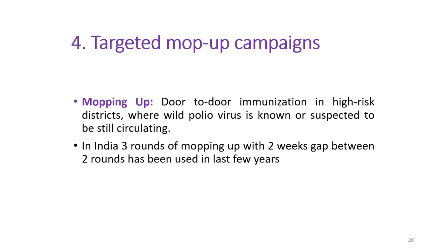The fourth strategy for polio eradication is targeted mop-up campaigns. Mopping up means door-to-door immunization in high-risk states where wild polio virus is known or suspected to be circulating, trying to immunize every left-out child in areas with high risk of polio transmission. In India, three states have been used in the last few years for mop-up campaigns.